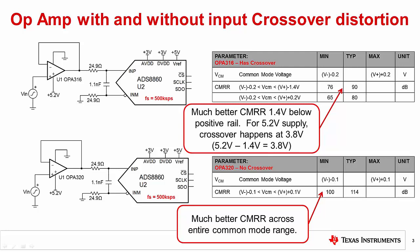The OPA316 CMRR is better in the restricted range because it avoids the crossover region. The upper common mode limit of 1.4 volts below the positive supply is about where the crossover distortion will happen. So in this case, the crossover happens at 3.8 volts, calculated by subtracting 1.4 volts from the 5.2 volt supply. The OPA320 has good performance across the entire common mode range, so you can assume it's a zero crossover distortion device. Also note that most zero crossover amplifiers will highlight this feature on the datasheet front page, whereas rail-to-rail devices with crossover distortion may not emphasize this limitation.